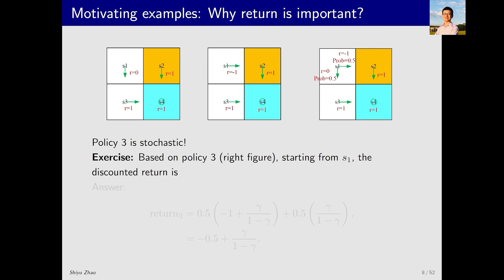The return for the third policy is more complex since the policy is stochastic due to its 50% probability of moving right and 50% probability of moving down. We give the result directly. If its trajectory involves moving right first, followed by moving down, the corresponding return is negative 1 plus gamma divided by 1 minus gamma. This calculation has been given on the previous slide. If it initially moves down along this trajectory, what is the return? It is gamma divided by 1 minus gamma, a result that we calculated on the slide before the last. The policy has a 50% probability of moving right and a 50% probability of moving down. Therefore, we add 0.5 in front of each representing its probability. The final result is negative 0.5 plus gamma divided by 1 minus gamma. This is the return corresponding to the third policy.